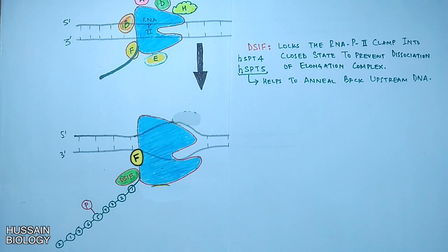And this SPT5 subunit helps to reaneal back the upstream DNA. And also note here this DSIF can negatively regulate transcription if it binds NELF factor, which we will see later on.